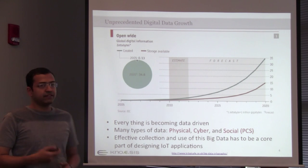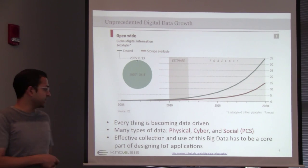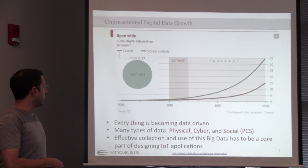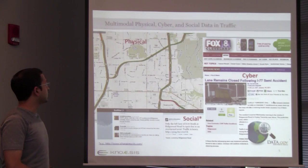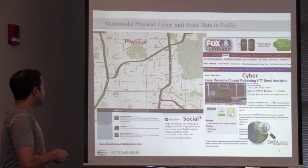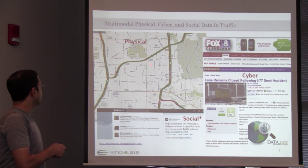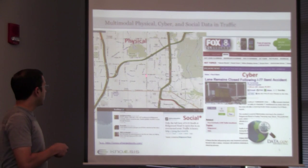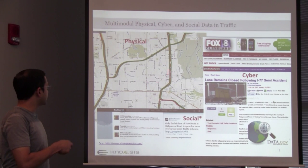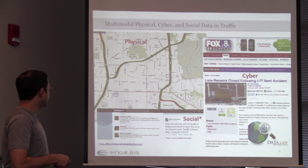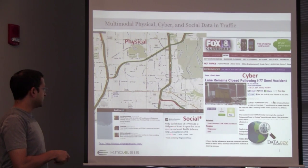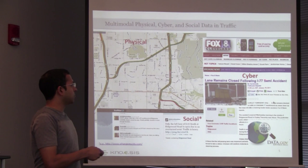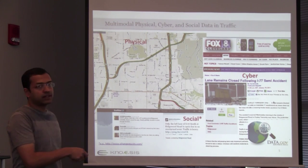What we need is to derive insights and actionable information by combining data from all these different modalities. To demonstrate, let's consider the traffic scenario. Sensors are reporting slow moving traffic — that is the physical world. These sensors can report pretty much anything like volume and travel time, and they are deployed in many cities; this particular snapshot is from the San Francisco Bay Area. At the same place, there was information from social media reporting that there is an accident, and also a news article in the cyber world talking about that same accident.